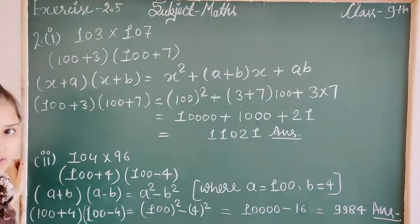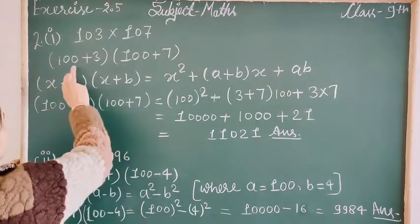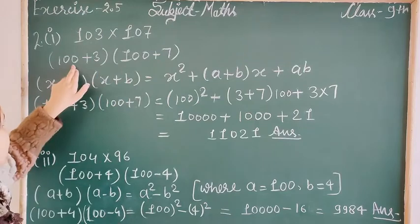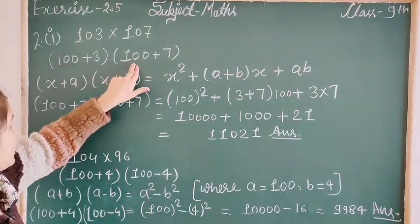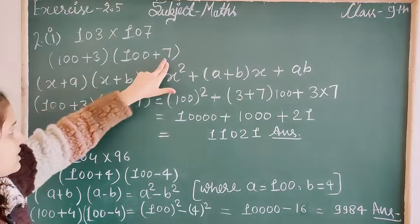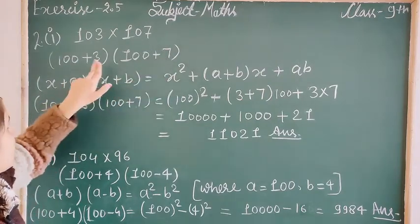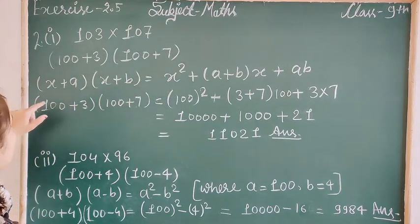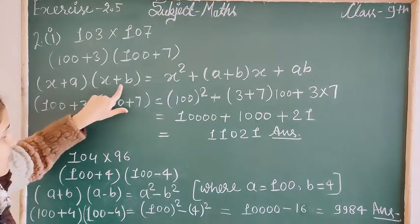We apply the formula. This becomes (100+3)(100+7). Here x is the common term 100, and a=3, b=7. The formula is (x+a)(x+b).